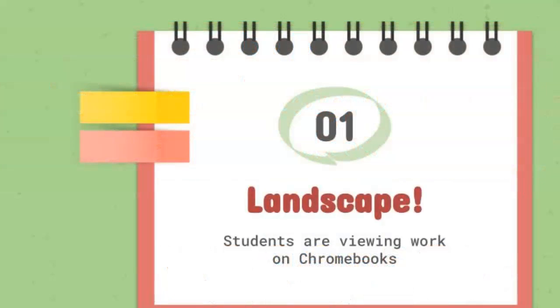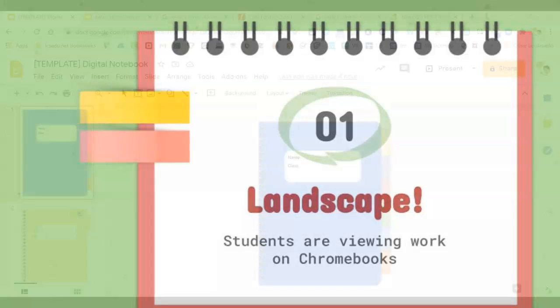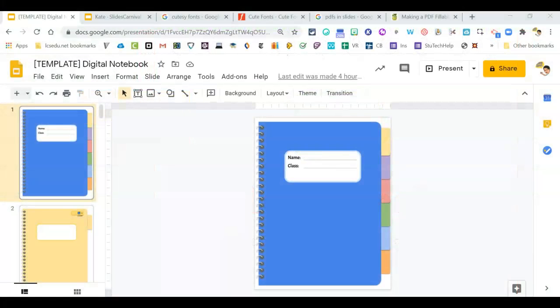Think about how students are viewing your activity. On a Chromebook, the screen is much smaller than we're used to. So when you make your activities, try to generate them in landscape mode.